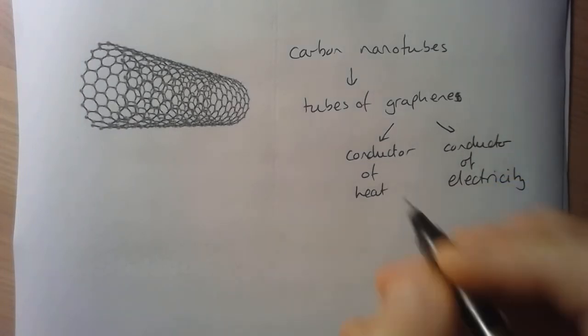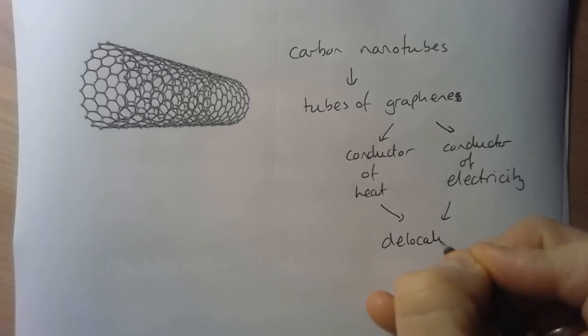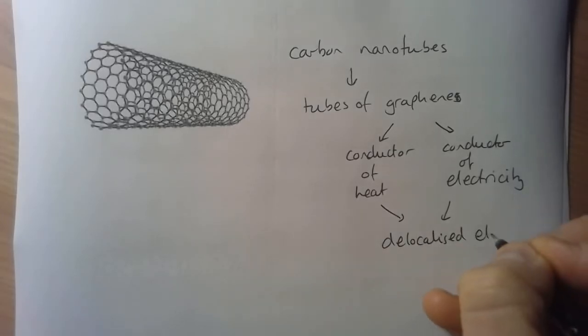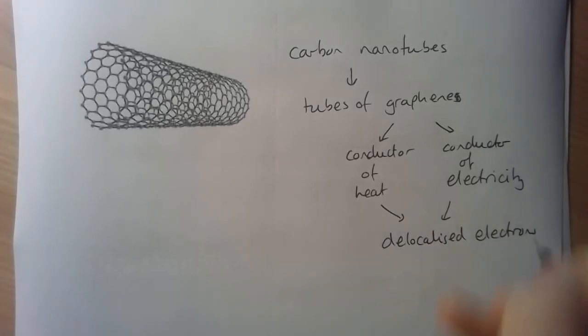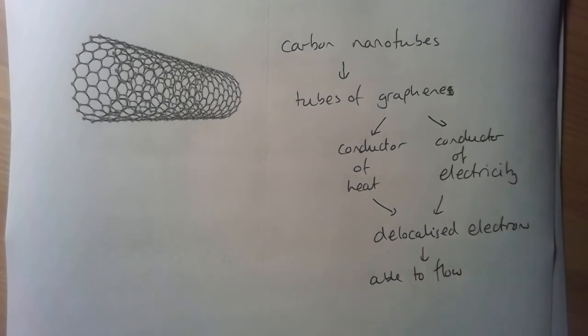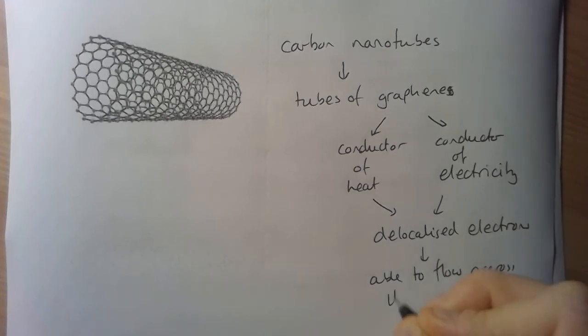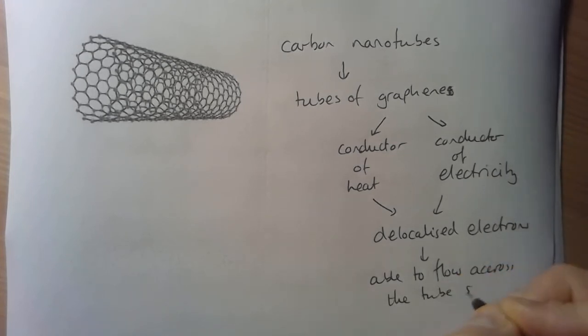The reason it's a good conductor of heat and electricity is because we have a delocalized electron, or delocalized electrons, one per carbon atom. And these are able to flow through the structure and carry a charge, or flow across the tube surface.